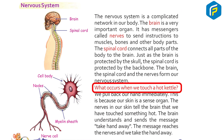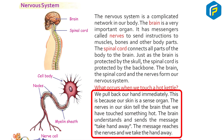When we touch a hot kettle, we pull back our hand immediately. This is because our skin, a sense organ, has nerves that tell the brain we have touched something hot. The brain understands and sends the message to take the hand away, and we pull it back.